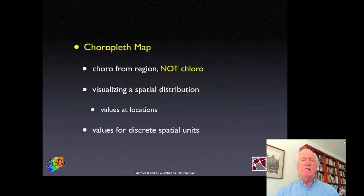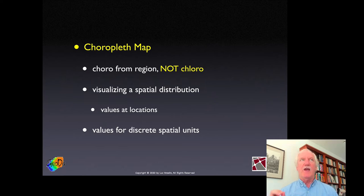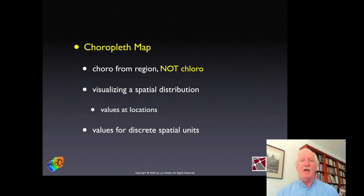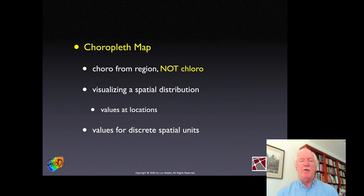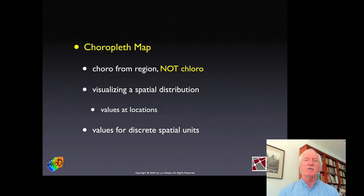What are the building blocks? First, a pet peeve: it's a choropleth map, not 'chloropleth.' A map visualizes a spatial distribution. A critical characteristic of spatial analysis is the combination of location with data — location with attributes. So a map shows that distribution: how the attributes are distributed over space. Often it shows them in a choropleth map for discrete spatial units — counties, census tracts, provinces, things of that nature.